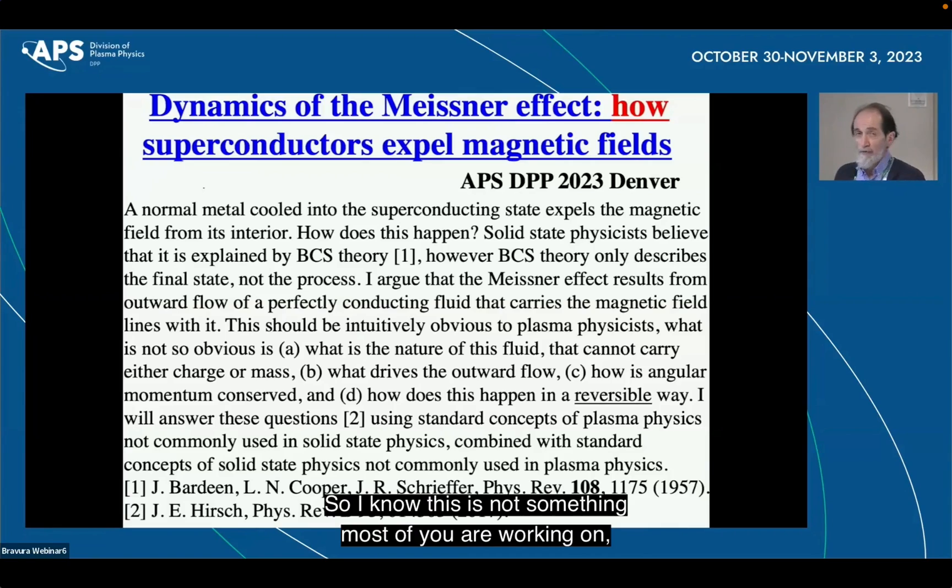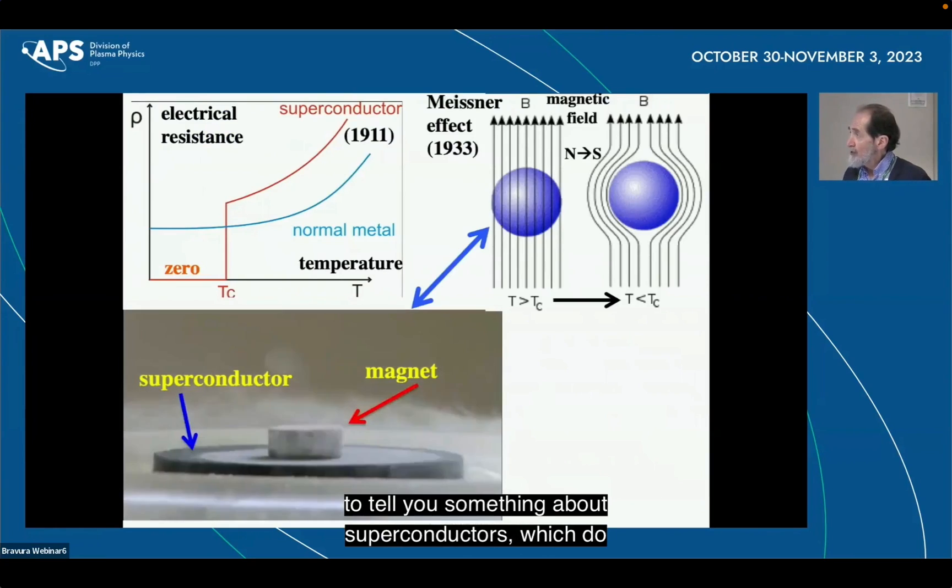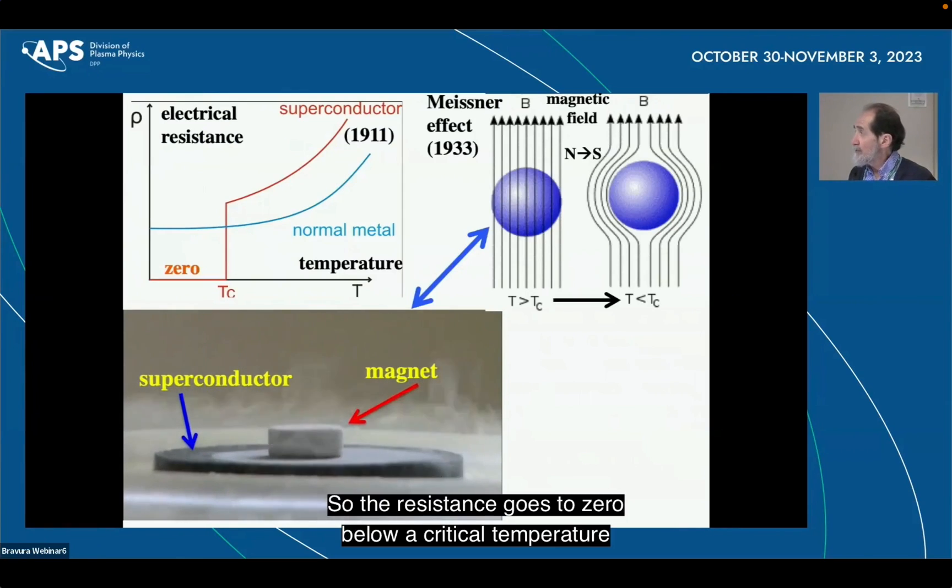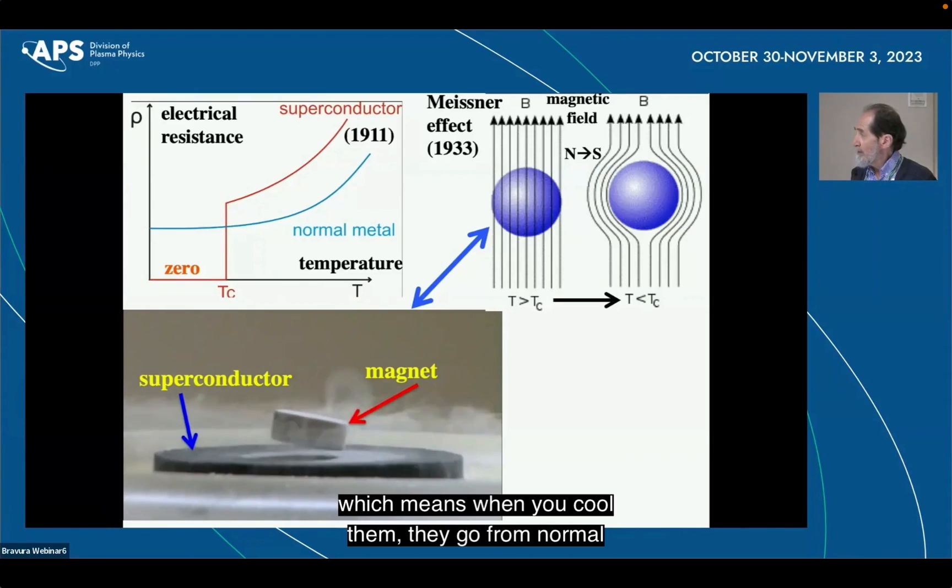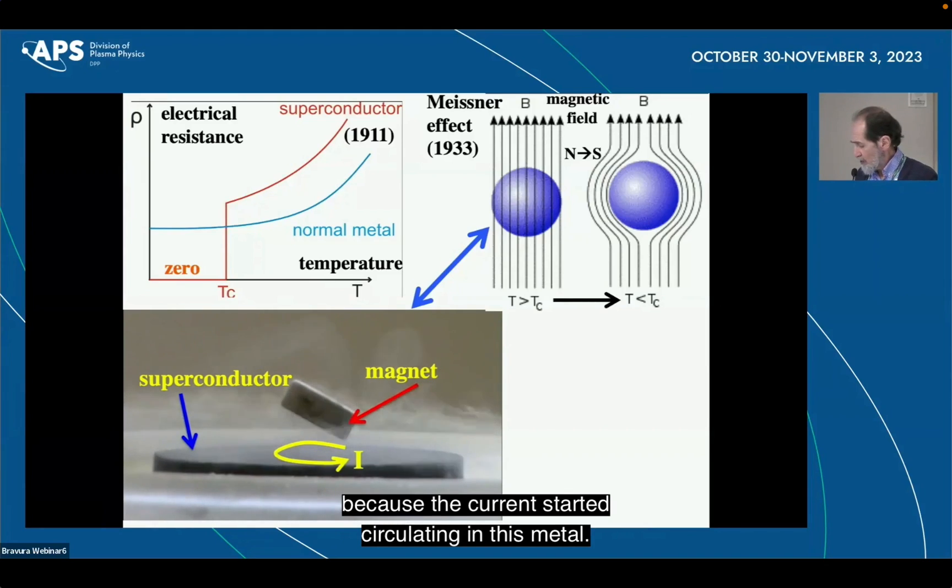I know this is not something most of you are working on, but I'm going to tell you something about superconductors, which do what these pictures show. The resistance goes to zero below a critical temperature, and they expel magnetic fields, which means when you cool them, they go from normal to superconducting, and a magnet that's sitting on top of it moves up. That is the Meissner effect. And so the magnet moves up because the current started circulating in this metal when you cooled it below the critical temperature.